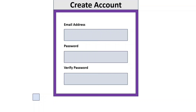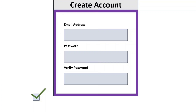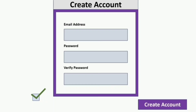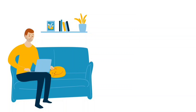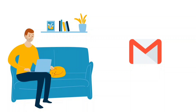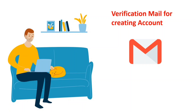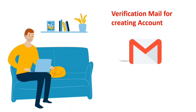Once you click that link, you will be taken to a page that asks you to create your account. Here you need to enter the email address you registered with Accenture, then your password and verify password. There will also be an agreement checkbox — read it, check it, and submit. After that you will receive another mail from Accenture to verify your created account. This is just a verification mail for your account.